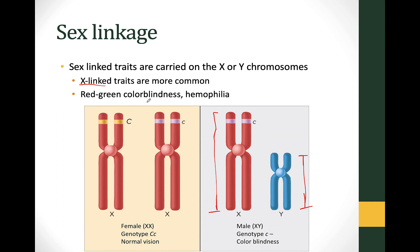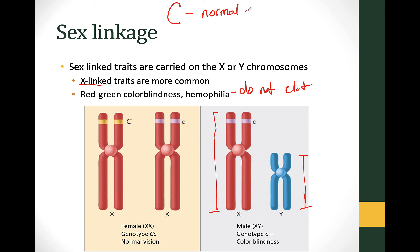The X chromosome has many different genes on it. Some common X-linked disorders are red-green color blindness and hemophilia. Hemophilia is a bleeding disorder where someone does not clot well, making them more apt to bleed out from cuts or internal damage. In the color blindness example, big C is dominant and stands for normal vision, and little c stands for colorblind.